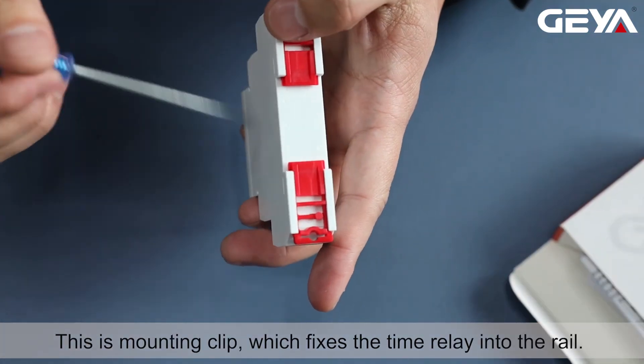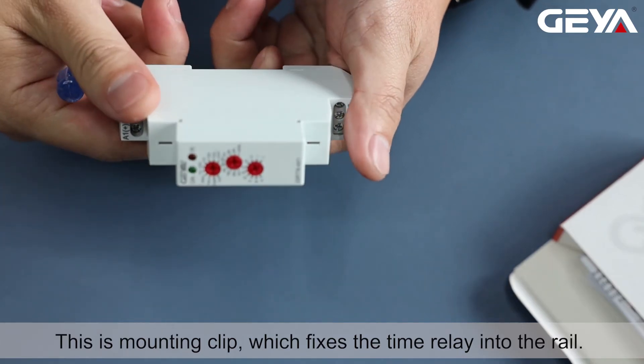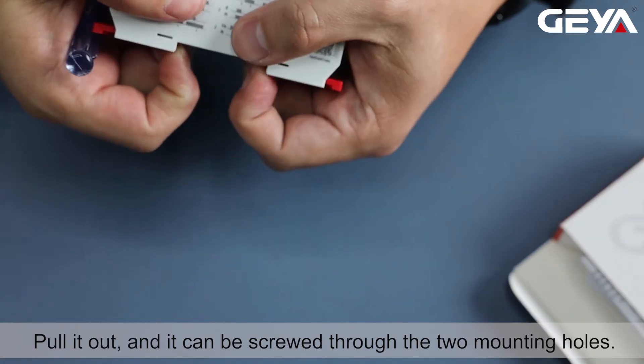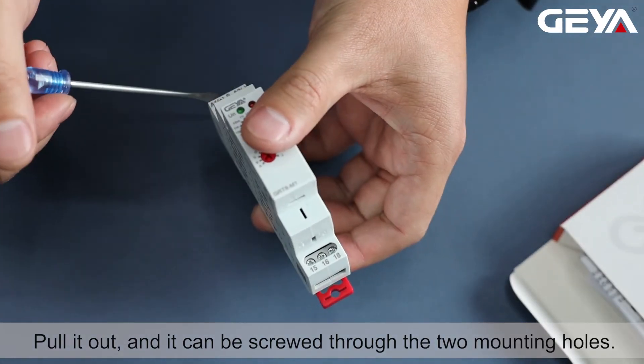This is the mounting clip which fixes the time relay into the rail. Pull it out, and it can be screwed through the two mounting holes.